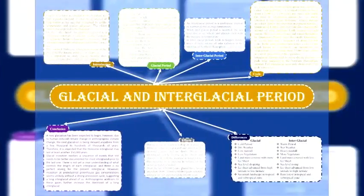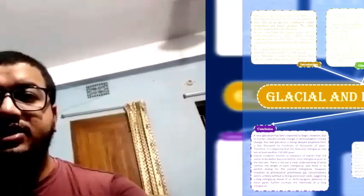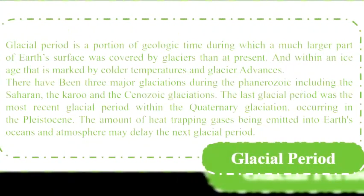A glacial period is a portion of geologic time during which a much larger part of Earth's surface was covered by glaciers than at present, and within an ice age it is marked by colder temperatures and glacier advances. There have been three major glaciations during the Paleozoic, including the Saharan, the Cryogenian, and the Cenozoic glaciations.